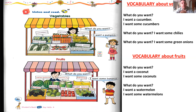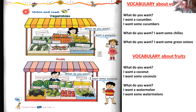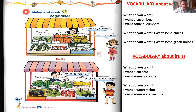Second dialogue — the seller is asking: What do you want? I want some bananas. 'Some,' because when you go to the market you cannot buy just one banana — normally it's a bunch of bananas, around four to ten. I want some bananas. Now about vegetables: What do you want? I want a cucumber. Or: I want some cucumbers, if you need more than one.